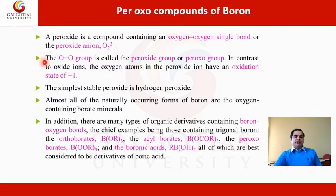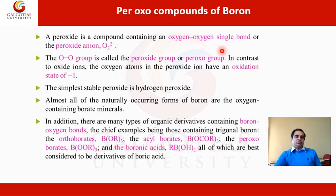We can see that the oxygen-oxygen group that we are calling is the peroxide group, which can also be referred to as the peroxo group. It consists in the structural formula of compounds like Na2O2, K2O2, H2O2, etc. We are having some peroxo compounds of boron, sulfur, and carbon. They consist of this oxygen-oxygen group, which we are calling a peroxide group — we have a peroxide group in their structural formula.